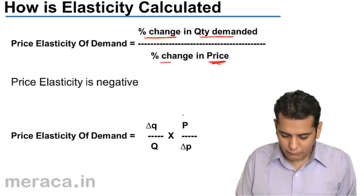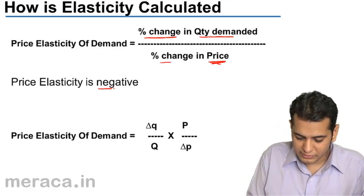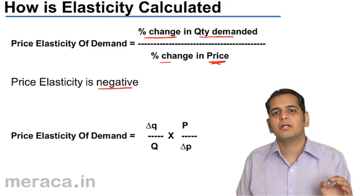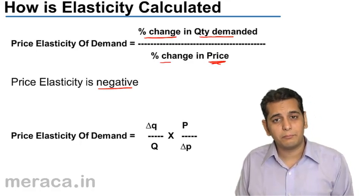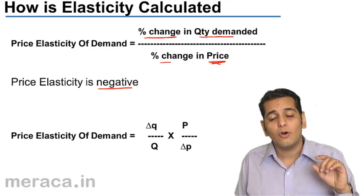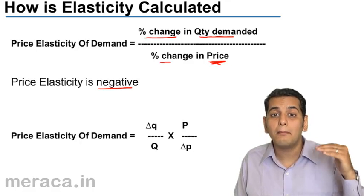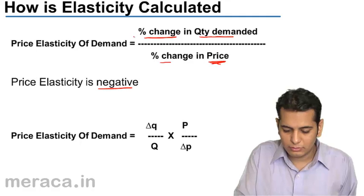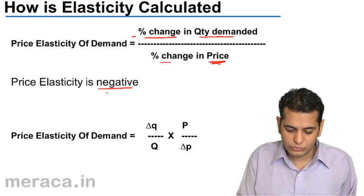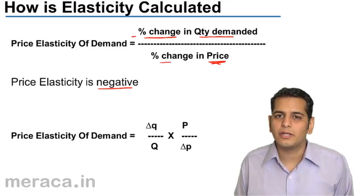It is very important to understand that price elasticity of demand is always negative. The reason being the relation between demand and price is indirect or negative — when price goes up, demand falls, and when price comes down, demand rises. So there will always be an inverse relation. If price falls by 3 rupees, demand may go up by 10 units, so the answer will always be negative. However, while considering price elasticity of demand, we generally tend to ignore the minus sign.